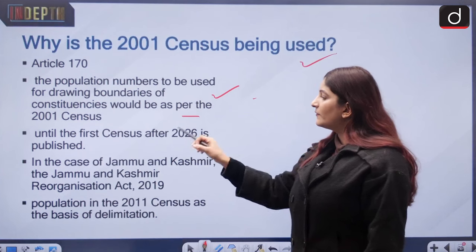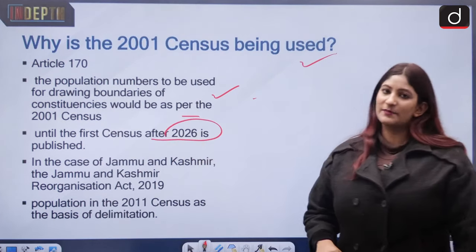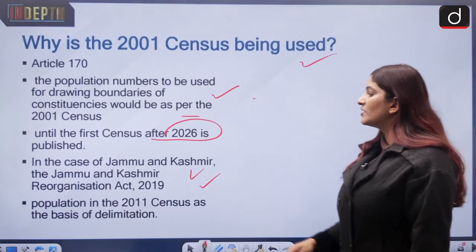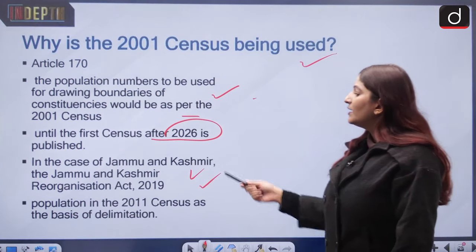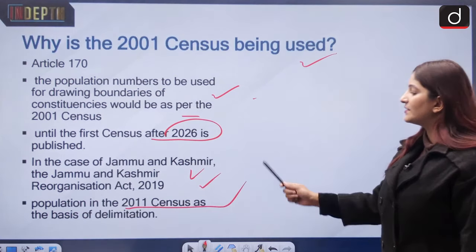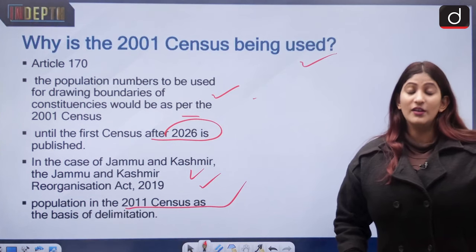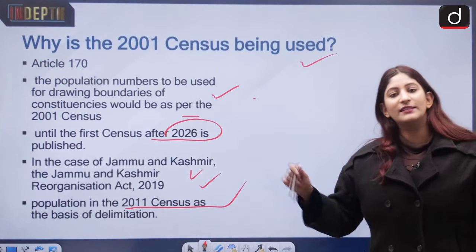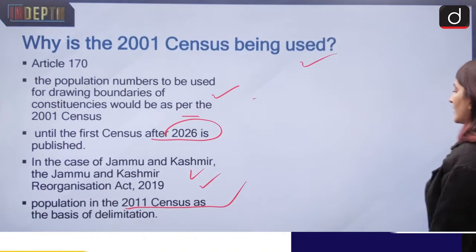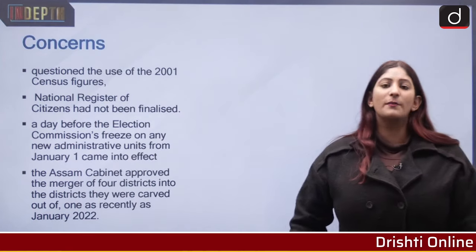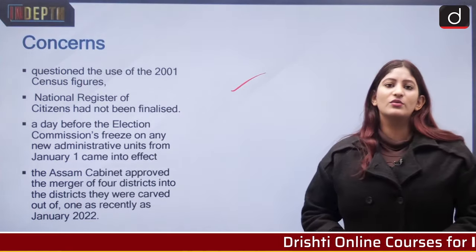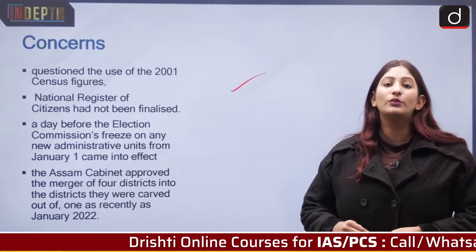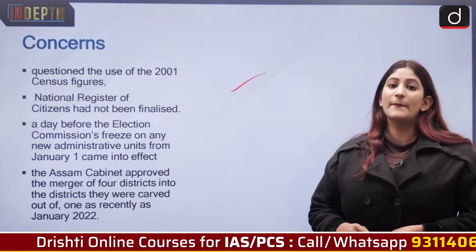This 2001 census basis will remain until the first census after 2026 is published. In contrast, the Jammu and Kashmir Reorganization Act of 2019 used the 2011 census as the basis for J&K's delimitation. The opposition in Assam is questioning why the 2001 census is being used instead of the 2011 census, arguing that people would remain underrepresented. This remains a point of controversy.